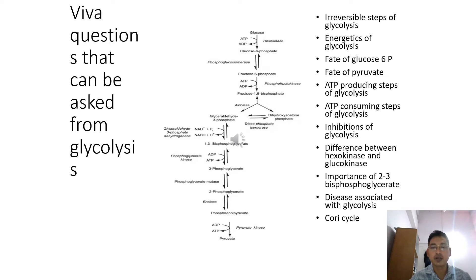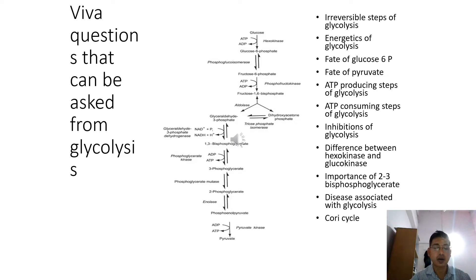Then what are the different fates of pyruvate? Pyruvate, in aerobic conditions, is converted to acetyl-CoA by the pyruvate dehydrogenase complex enzyme. And in anaerobic conditions, this pyruvate will be converted to lactate by the cytosolic enzyme lactate dehydrogenase. Pyruvate can also be converted to oxaloacetate by a carboxylation reaction — a biotin-dependent carboxylation reaction catalyzed by pyruvate carboxylase.